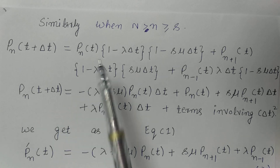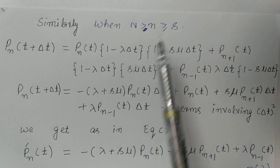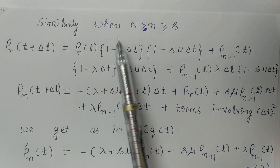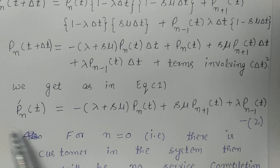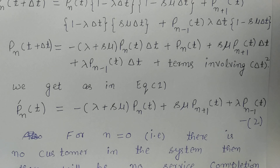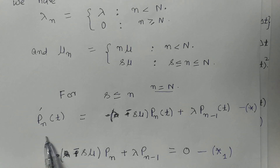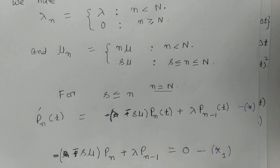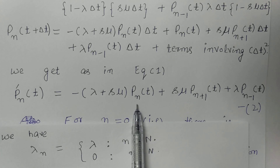Similarly, when N is greater than or equal to S but strictly less than capital N, this case is similar to the previous model. This gives us Equation 2. Now I will discuss the additional equation formed in this model: P'_N(t) when N equals capital N, that is when the number of customers reaches the maximum system capacity.